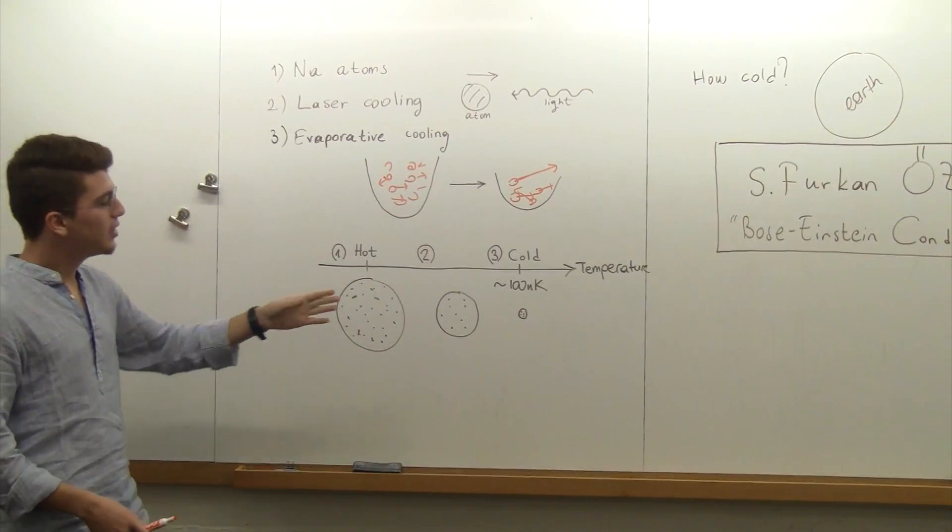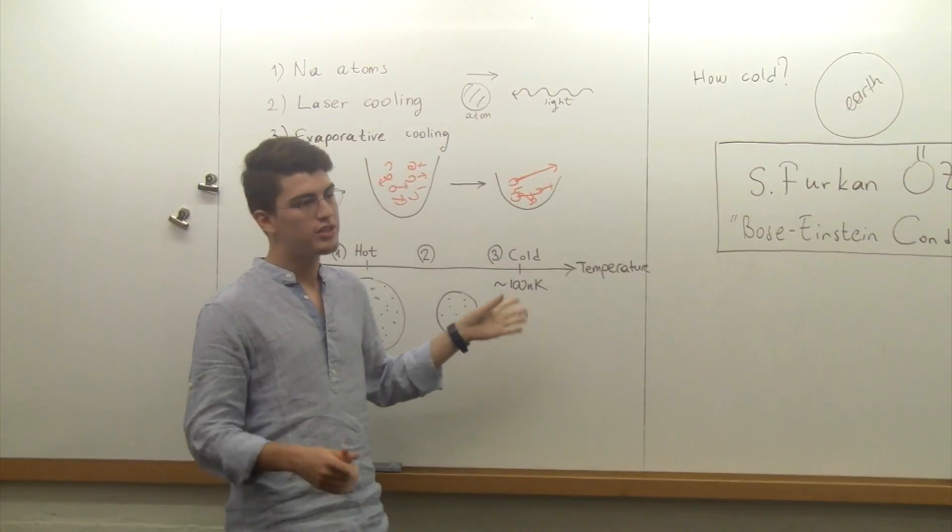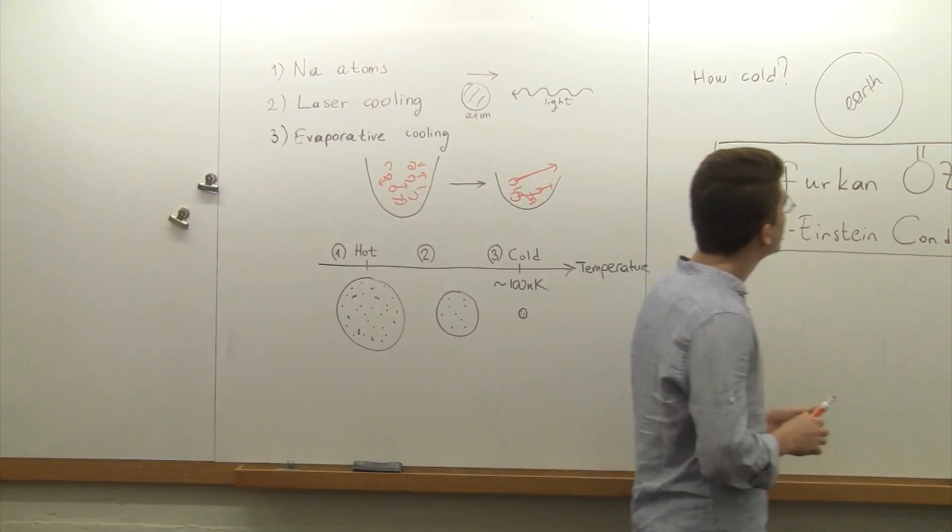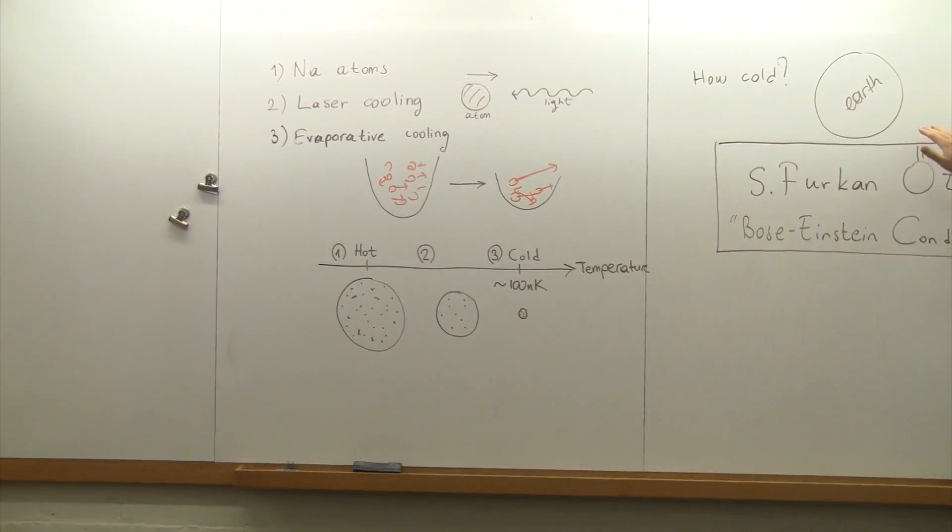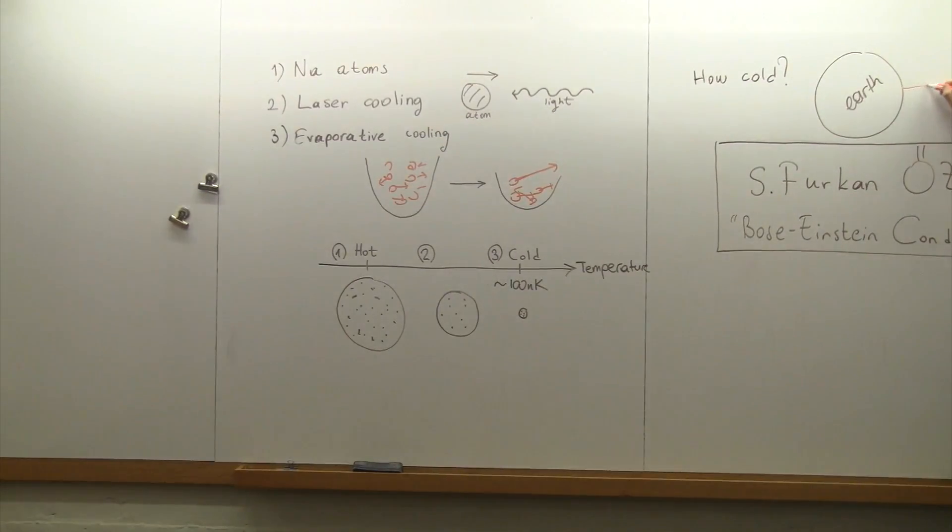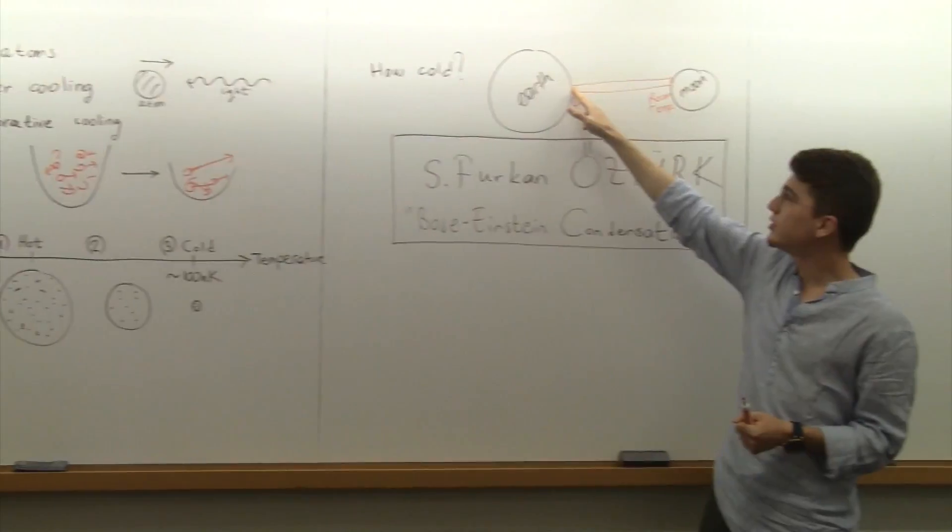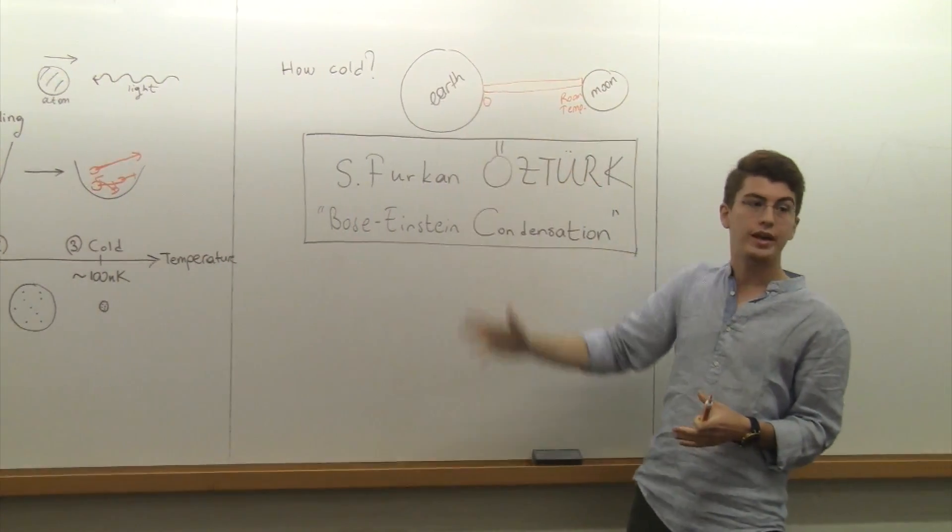But how cold is it? I mean, 100 nano-kelvins doesn't make any sense to me - it's just numbers. I know how big it is, but it doesn't make sense. I will try to explain. Imagine we built a thermometer that reaches all the way from Earth to the Moon - a very big one. If we calibrate so that zero is at Earth and room temperature is at the Moon, the temperatures we reach is just a hair's width away from absolute zero. So that's cold.